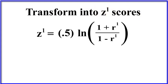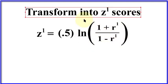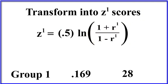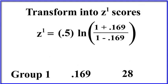And there's the formula. So to change anything into a z-prime, you take 0.5, you multiply it by the natural logarithm of 1 plus the correlation divided by 1 minus the correlation. And that Fisher guy, man, he was so smart. So we're going to substitute values. There they are.